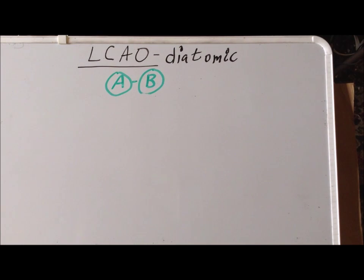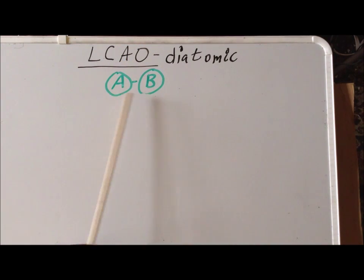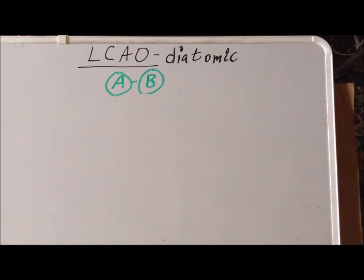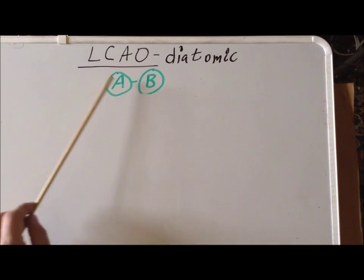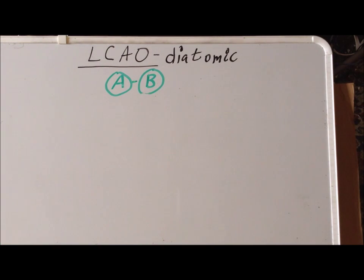Hello. In this video, we are going to derive an expression for the normalization constant for a molecular orbital formed by a linear combination of atomic orbitals for a diatomic molecule, where one atom we call a and another one we call b. For consistency, we call the atomic orbital on a, 'a', and the atomic orbital on b, 'b'.